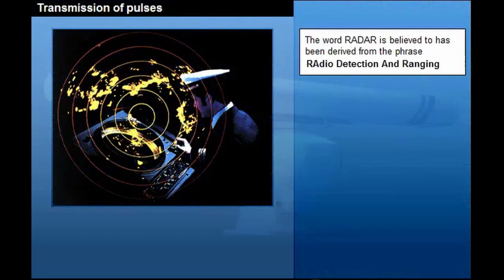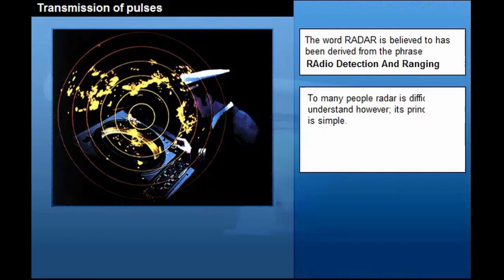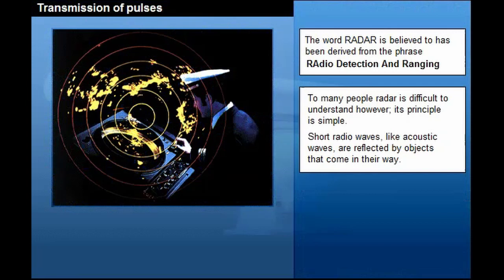The word radar is believed to have been derived from the phrase radio detection and ranging. For many people, radar is difficult to understand. However, its principle is simple. Short radio waves, like acoustic waves, are reflected by objects that come in their way.